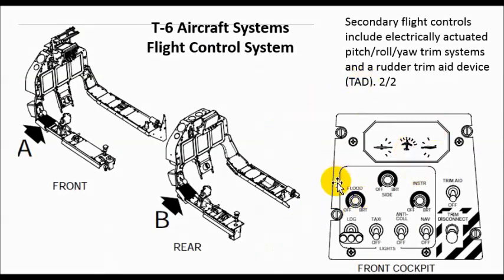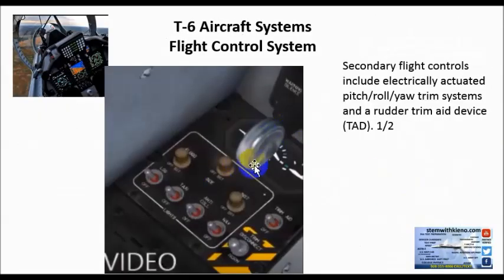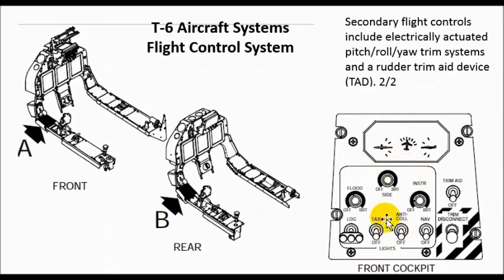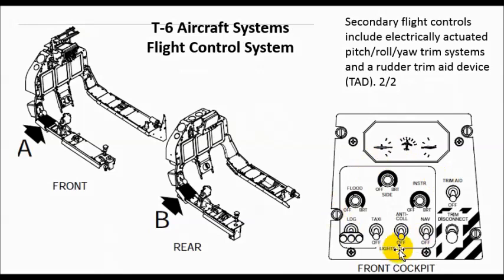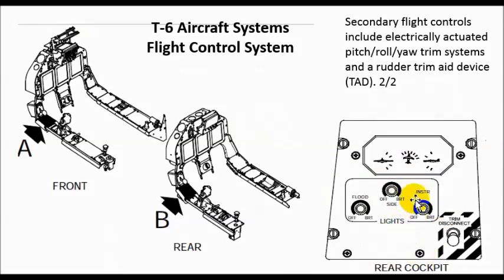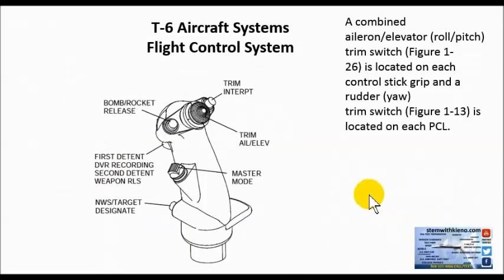I inserted this slide so you can actually see the face of it really well, because the landing gear handle on the simulator blocks the visual trim indicator positions. We have the front cockpit and the rear cockpit. A combined aileron elevator roll pitch trim switch, located in figure 1-26 in your flight manuals, is located on each control stick grip.